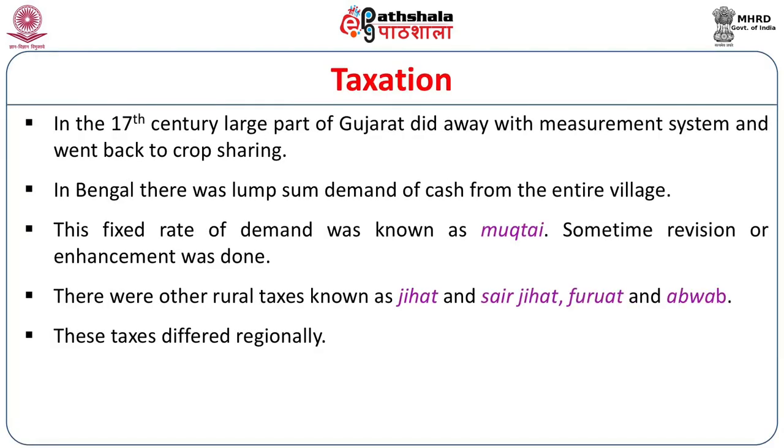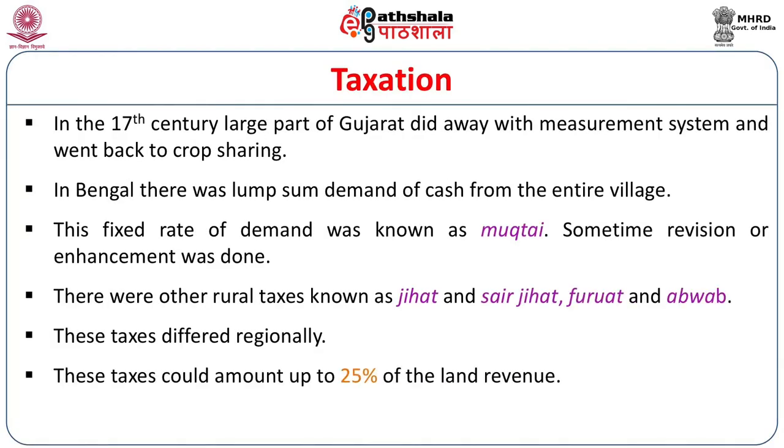These taxes differed regionally and could amount to up to 25% of the land revenue. So the collective tax on land, on crops, and the other taxes amounted to a great sum, and it was definitely a regressive measure on the peasants.